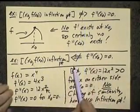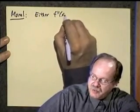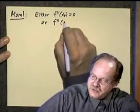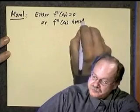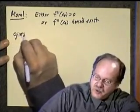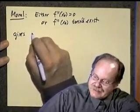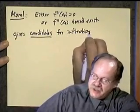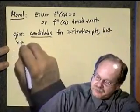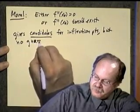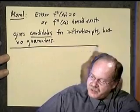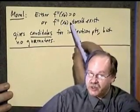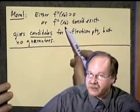The moral is: either f″(x₀) = 0 or f″(x₀) doesn't exist — these give candidates for inflection points, which at least narrows down the possibilities. But there are no guarantees. We can narrow down possibilities by checking whether the second derivative fails to exist or is zero, but you can't guarantee the points you find are necessarily inflection points.